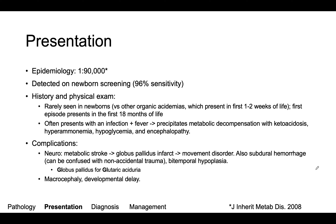Some of the complications of this disease are primarily neurologic. This can result in a metabolic stroke, which classically leads to infarction of the globus pallidus, which is the movement center of the brain, and can cause movement disorders in patients. We can also see subdural hemorrhages, which can actually be confused with non-accidental trauma. Sometimes we can also see bitemporal hypoplasia. As a memory device, the GL in globus is similar to the GL in glutaric, to help you remember that association. Patients can also present with an enlarging or large head circumference and developmental delay.